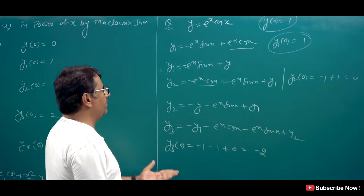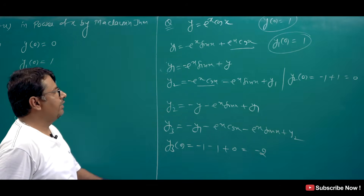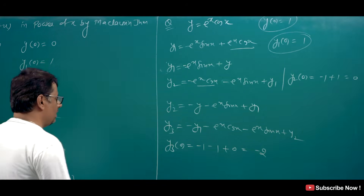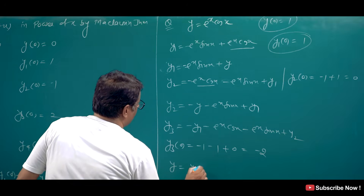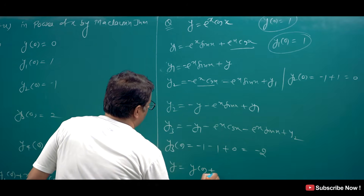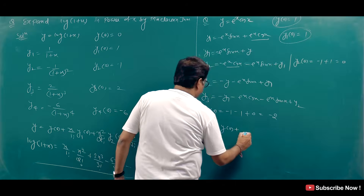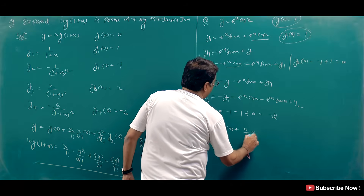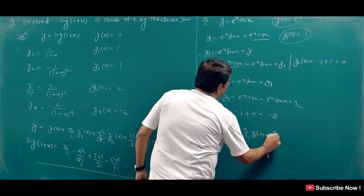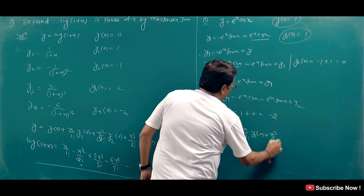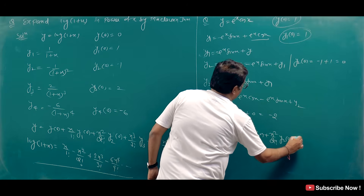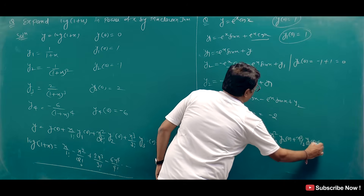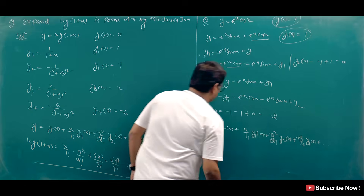Now we have to put in the values. What is the value? y = y(0) + x/1! · y₁(0) + x²/2! · y₂(0) + x³/3! · y₃(0). Now we substitute the values we calculated.